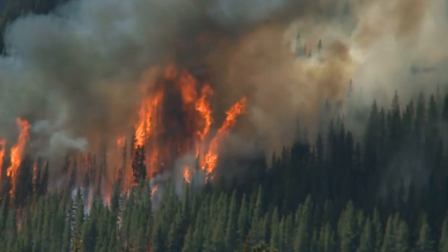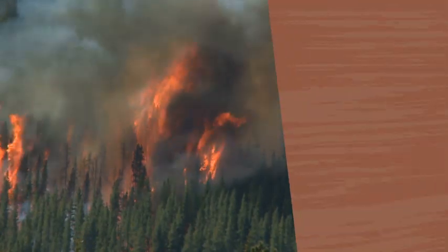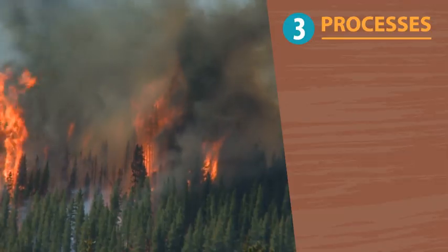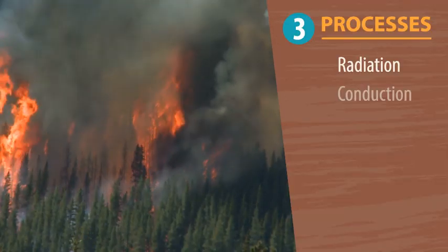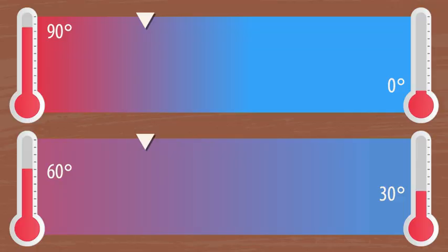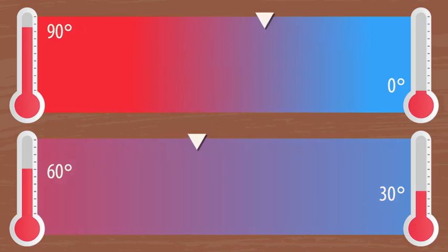In this video, we'll discuss how heat is gained and lost through the three heat transfer processes – radiation, conduction, and convection. Heat energy is always on the move, and it naturally flows from hot to cold. The bigger the difference between the hot and cold temperatures, the faster the heat will transfer.